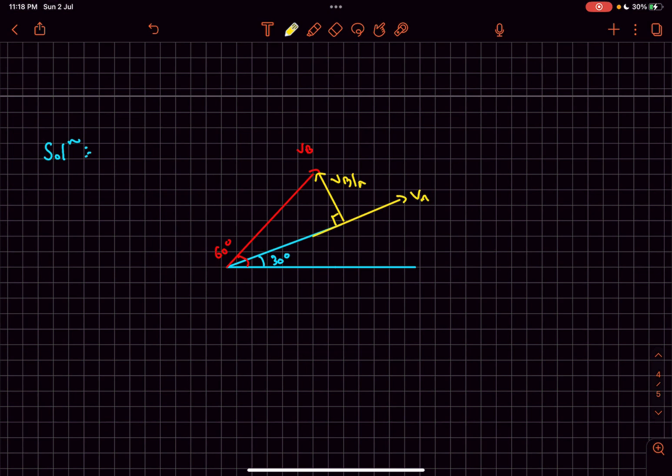Now the speed of A was given to be 100 root 3, so the length of this vector is going to be 100 root 3 meters per second. This angle will be 60 minus 30, that is 30 degrees. As this is a right triangle, we can get the value of vBA pretty easily.